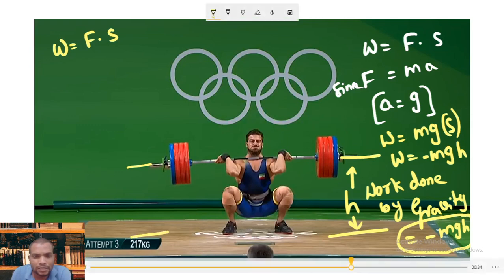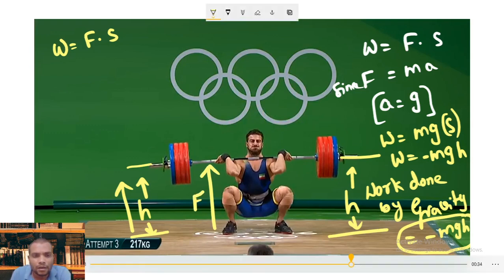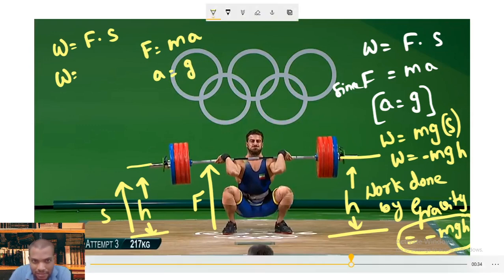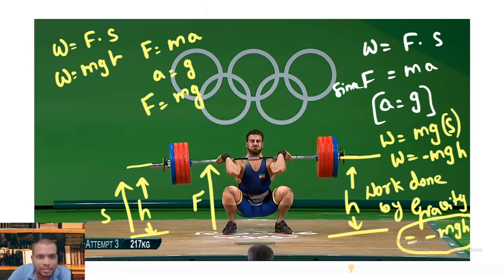Here the displacement is h, and the displacement direction is upward. The force applied by the athlete is also in the upward direction. Both the displacement direction and the force direction are the same. Using Newton's second law, F = ma and a = g, everything converts to F = mg. With displacement h, the work done by the athlete equals mgh.